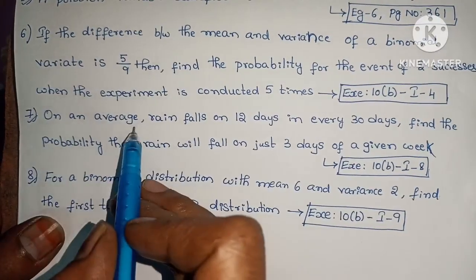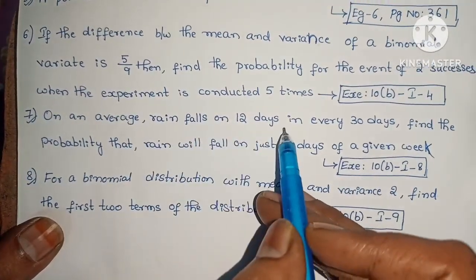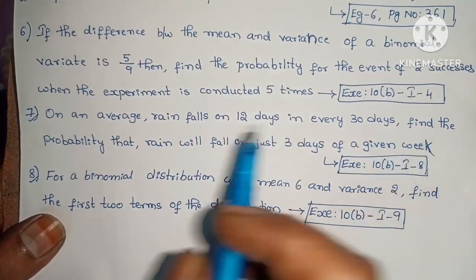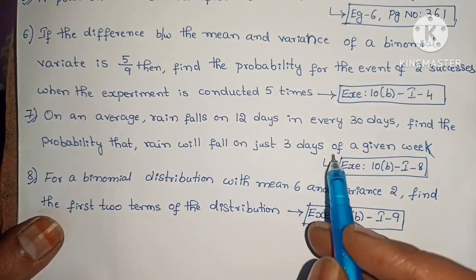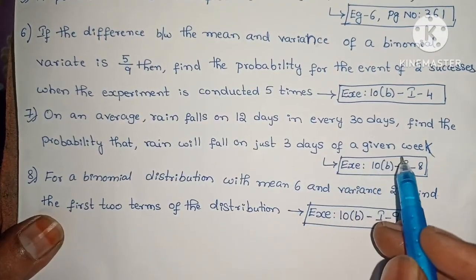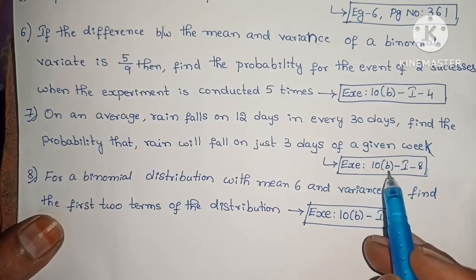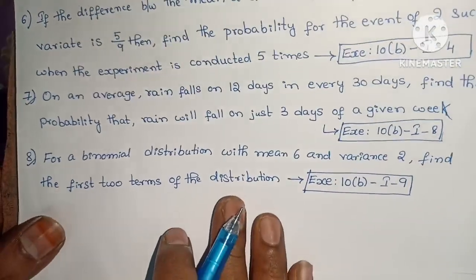On an average, rain falls on 12 days in every 30 days. Find the probability that rain will fall on just 3 days of a given week. Exercise 10, Section I, problem 8.